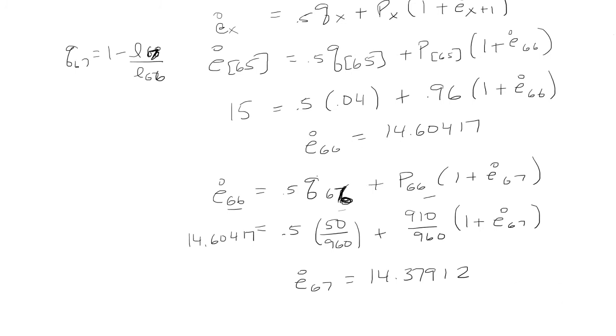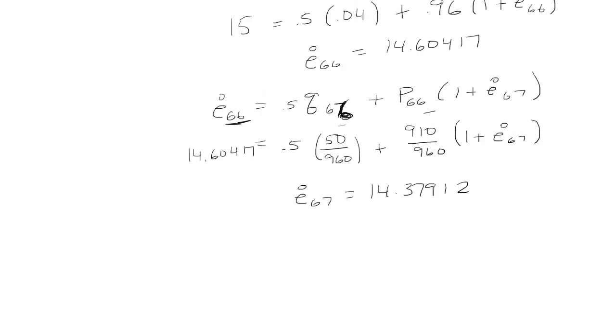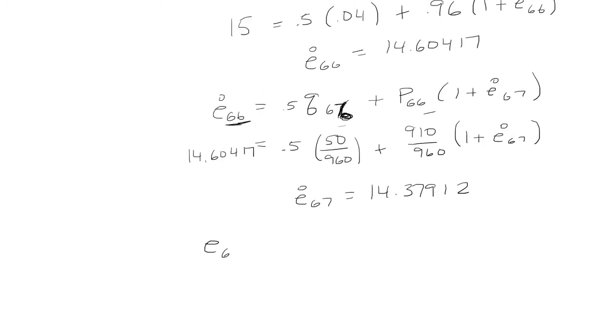Now the problem is we didn't do it for select age 66. Over here we just did it for age 66. We want to solve for the actual select age 66. So let's do that. So I'm basically going to copy everything I have except put a bracket around 66, so I'm copying it from this line. So the whole purpose of that line was to get to E67.